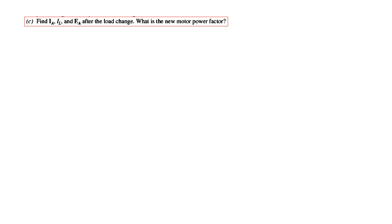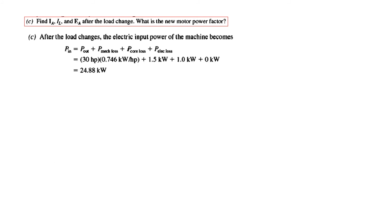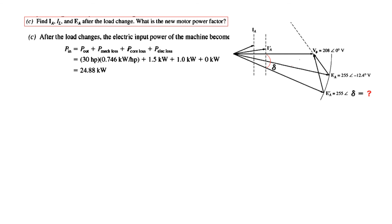Part 3 asks us to find the new Ia, Il, and Ea after the load increases to 30 hp, and to calculate the new power factor. We convert 30 hp to electrical power: 30 × 0.746 = 22.38 kW output. Adding the same mechanical and core losses, the new input power is 24.8 kW.